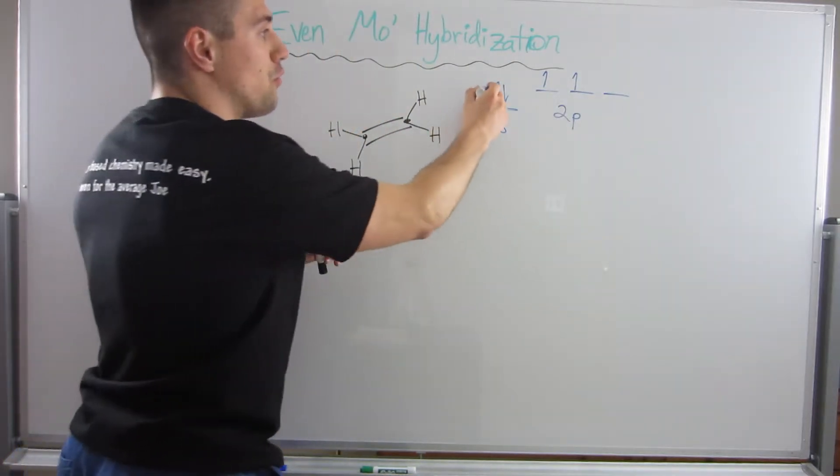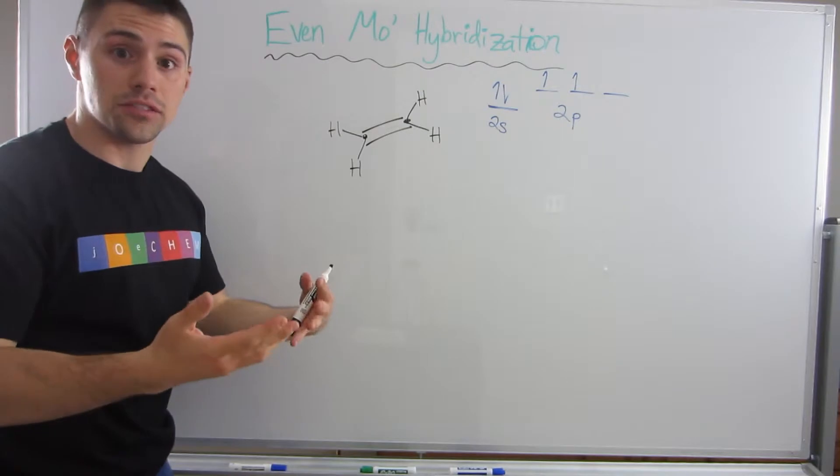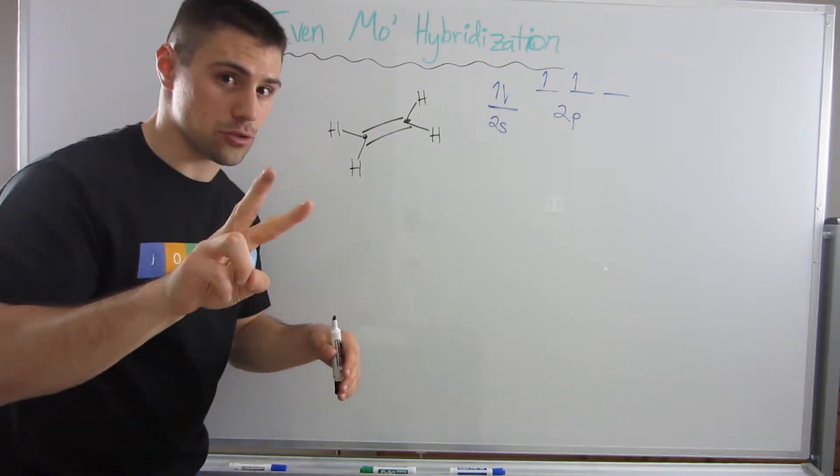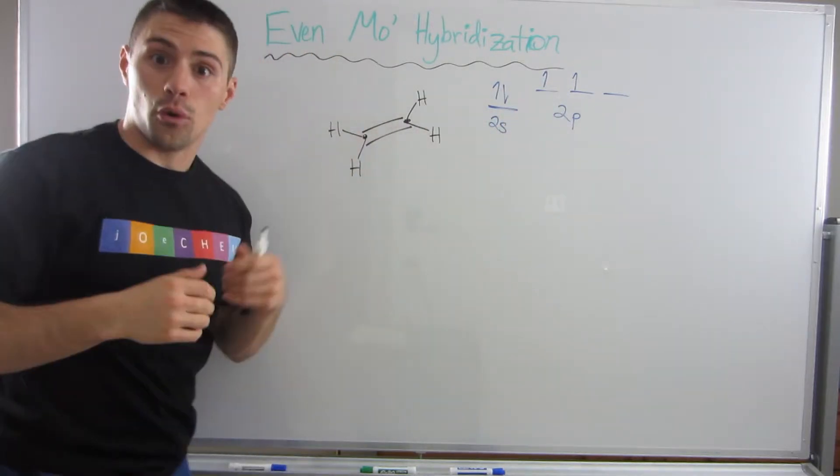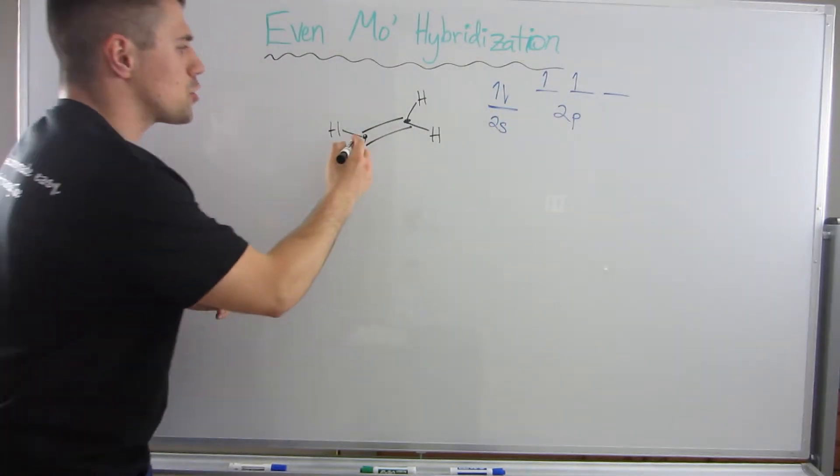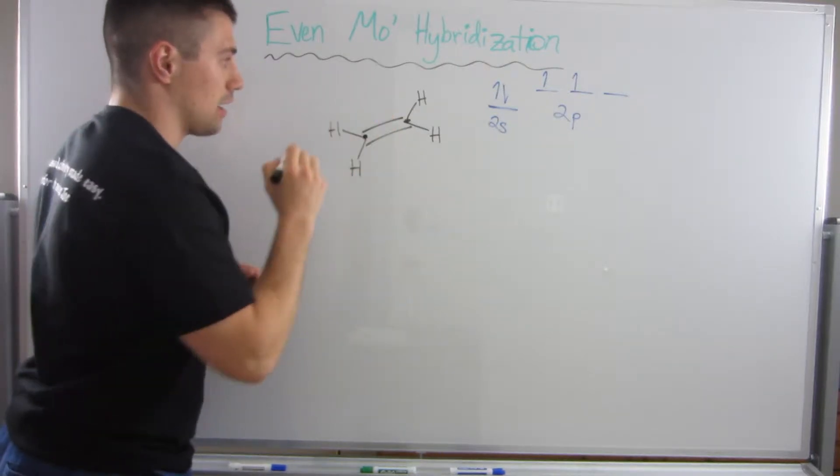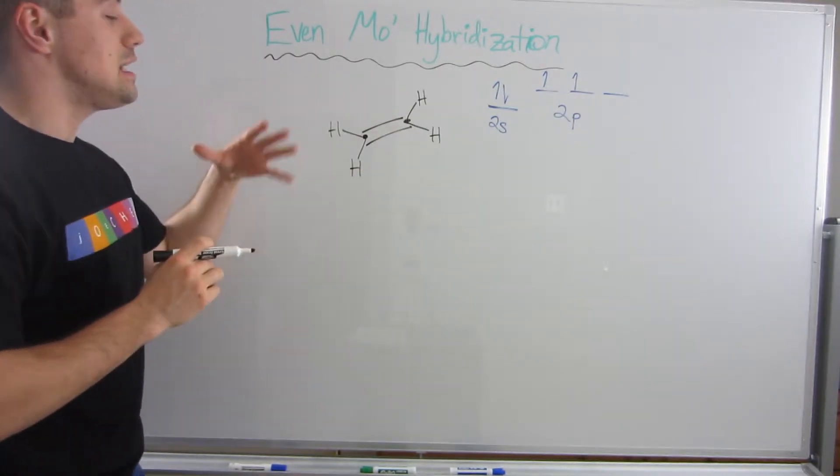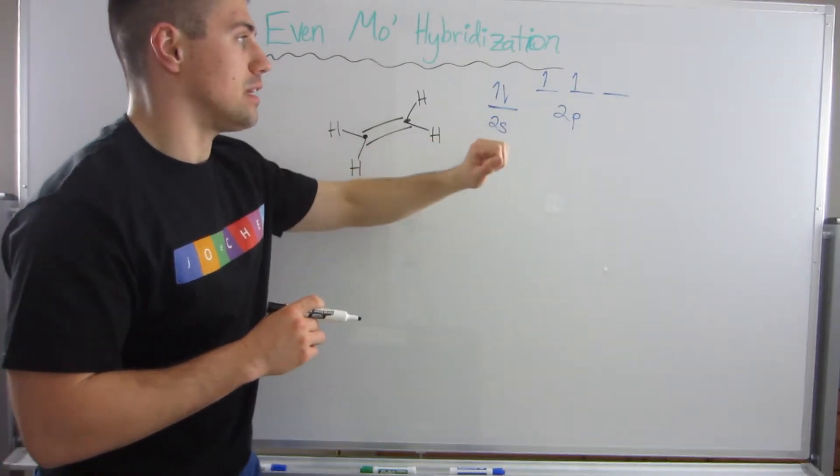So carbon has four electrons in its valence, which is why it wants to make four bonds. If we have a bond that consists of two electrons, our four will double to eight and we'll have a full octet. This carbon has three bonding areas. We can't just use a regular 2s and 2p because the 2s already has two electrons in it.